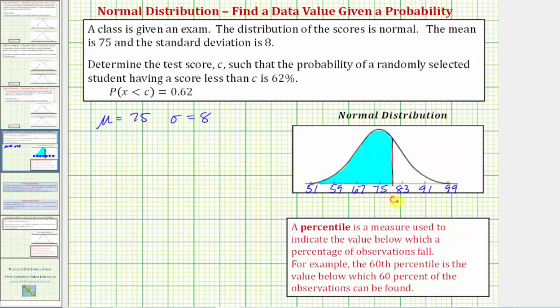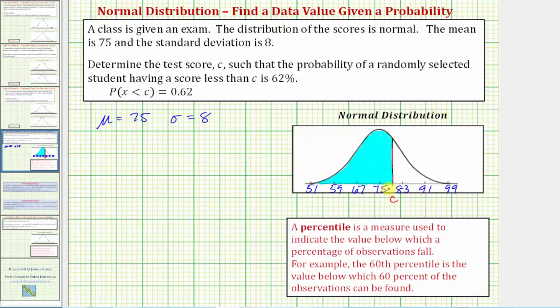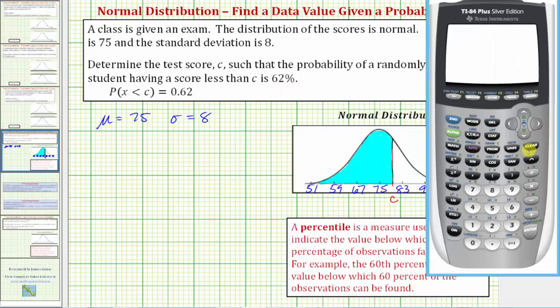To find the value of c on the TI-84 we'll be using the inverse norm feature, where once we access inverse norm we enter the probability or area to the left. In this case it will be probability. If we have z-scores we can also think of it in terms of area. Then we enter comma, the mean, comma, σ, the standard deviation. So it's important to remember when using the inverse norm feature you must enter the probability or area to the left, which in this case we do have. The probability to the left of c is 62 percent or 0.62.